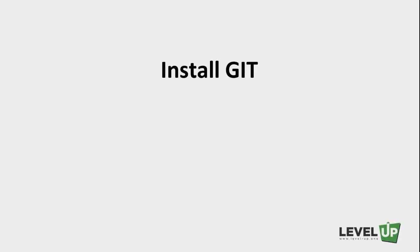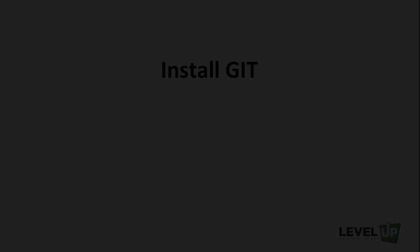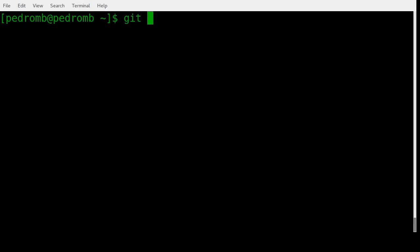I have uploaded all the source code for this course to GitHub. To download the source code, you need to have Git installed. Check if Git is installed by opening a command line terminal and typing git --version. If you have Git installed, this command prints the version. If not, let's install it.